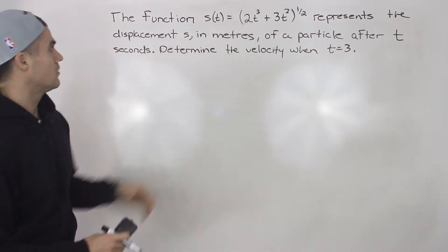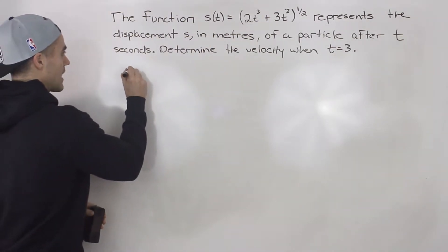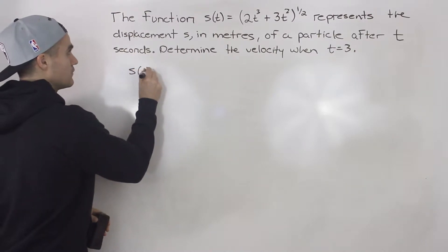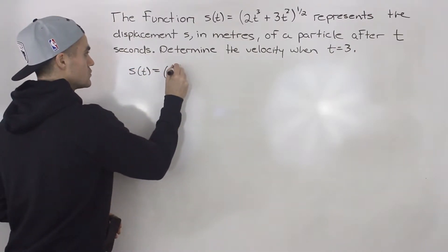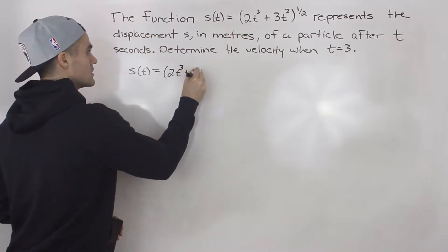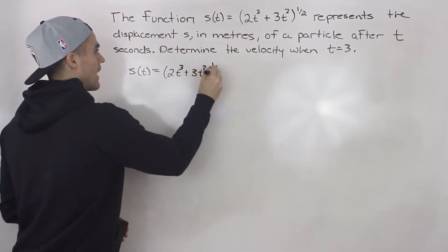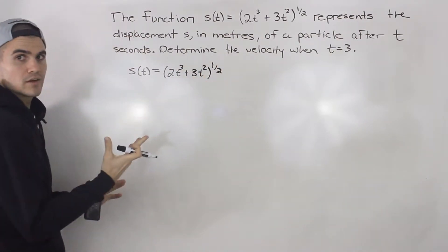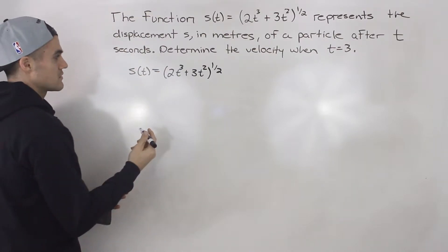So we know that if we have a displacement function, let's just rewrite this, so (2t³ + 3t²)^(1/2), we know that its derivative is going to be the velocity function.